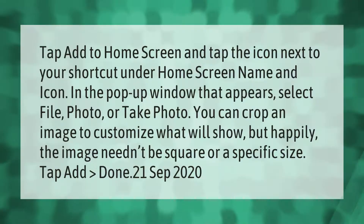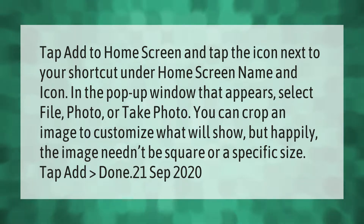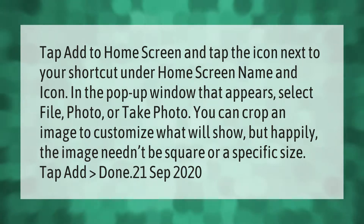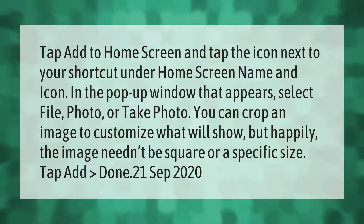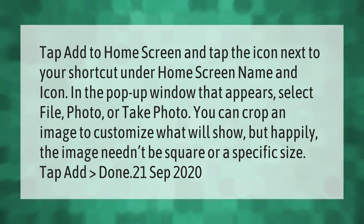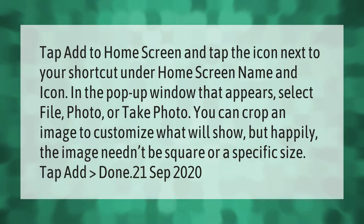Tap Add to Home Screen and tap the icon next to your shortcut under Home Screen Name and Icon. In the pop-up window that appears, select File, Photo, or Take Photo. You can crop an image to customize what will show. The image needn't be square or a specific size. Then tap Add, then Done.